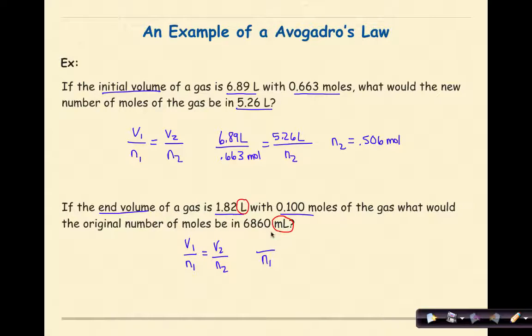My original volume, if I change that into liters, is 6.86 liters. My N volume is 1.82 liters. And my N number of moles is 0.100 moles.